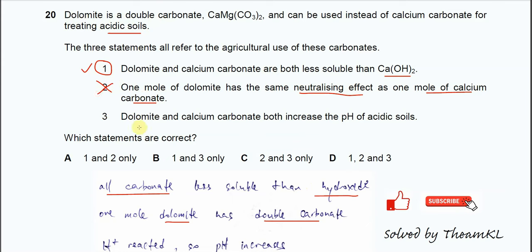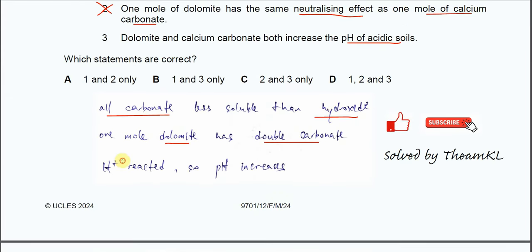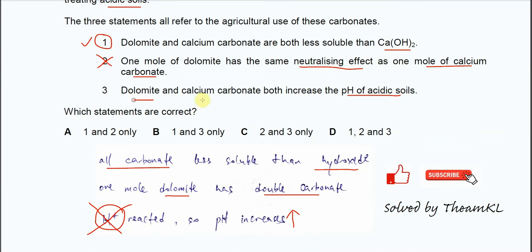Last statement: dolomite and calcium carbonate both increase the pH of acidic soil. First, you need to know all these carbonates will react with the H+ or hydrogen ion in the soil. After that, the concentration of hydrogen ion decreases and the pH will increase. Yes, because both are carbonate and will react with H+, H+ is less, so pH will increase.